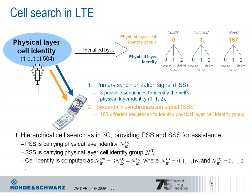To enable a hierarchical cell search, these 504 identities are divided into 168 unique physical layer cell identity groups, where each group consists of three physical layer identities. A helpful analogy is to think about first names and surnames. The most common English surname, according to statistics, is Smith — which would correspond to physical layer cell identity group number 0.